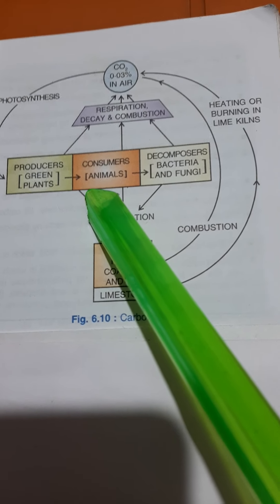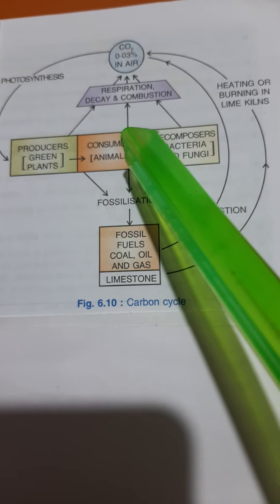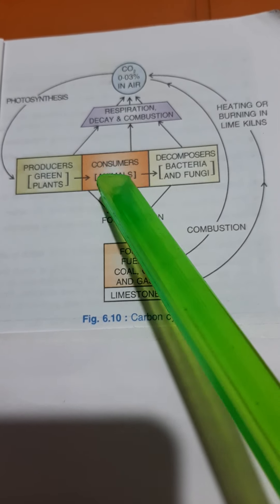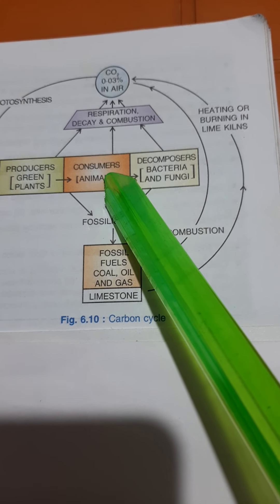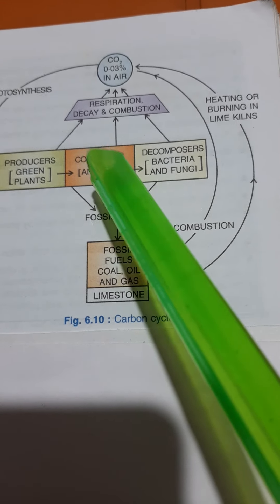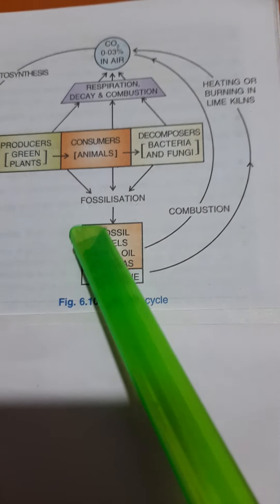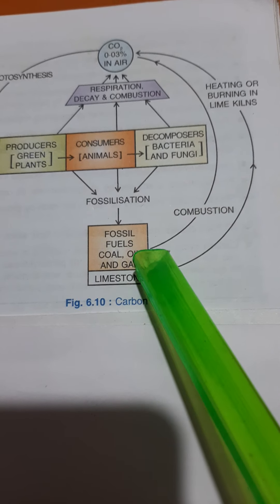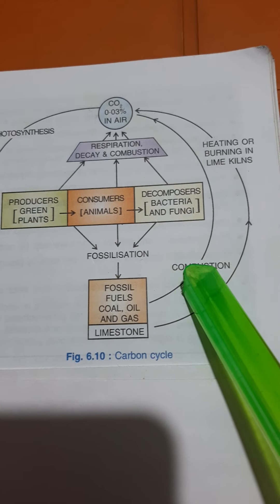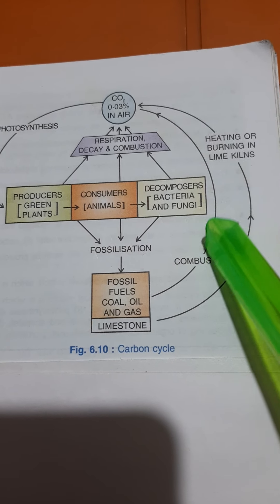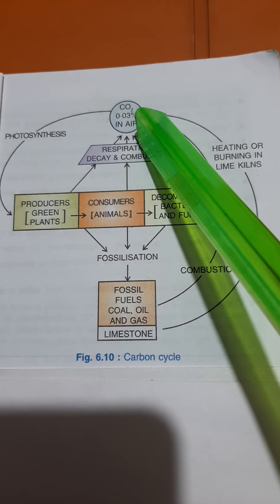During combustion — when there is burning taking place, combustion of fossil fuels, combustion of wood, combustion of coal — all of these originally come from living things. When they undergo combustion, in the process of burning, carbon dioxide is returned back into the air.